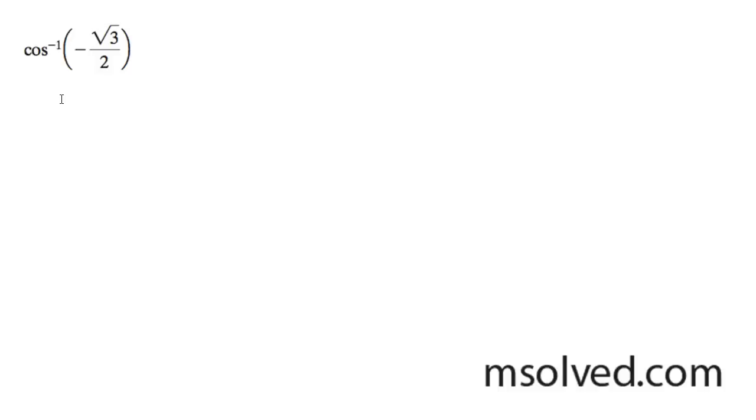We have the inverse cosine of negative root 3 over 2. What we can do here, I'm going to rewrite this out. It's equal to x.